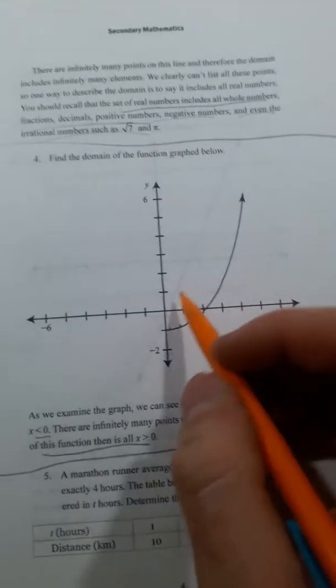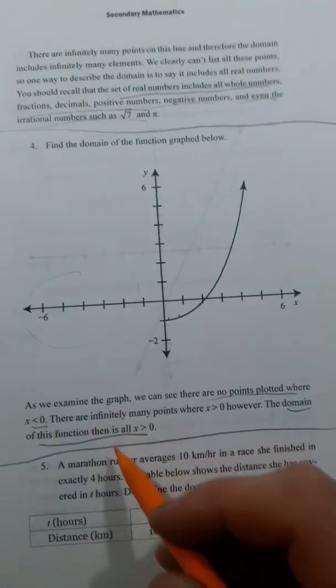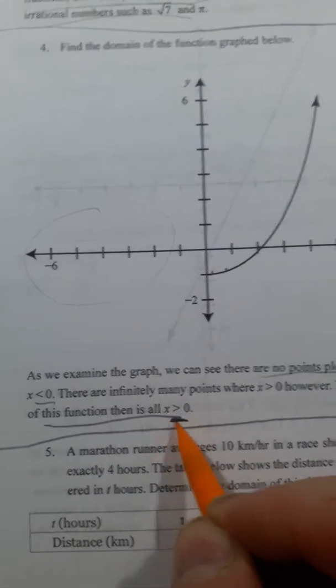It could be 3.25. But it can't be in any negative numbers. There's nothing over here. So the domain for this is all numbers that are greater than 0. x can be anything greater than 0.